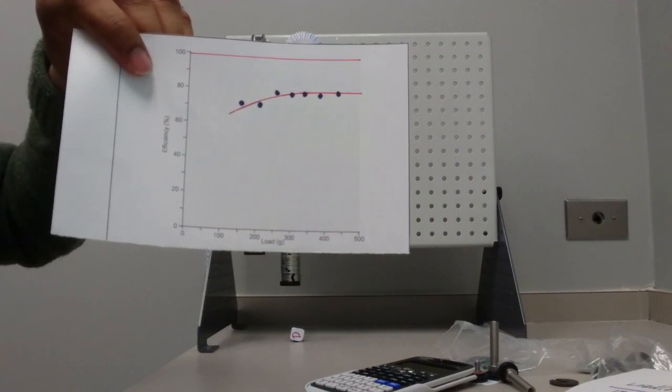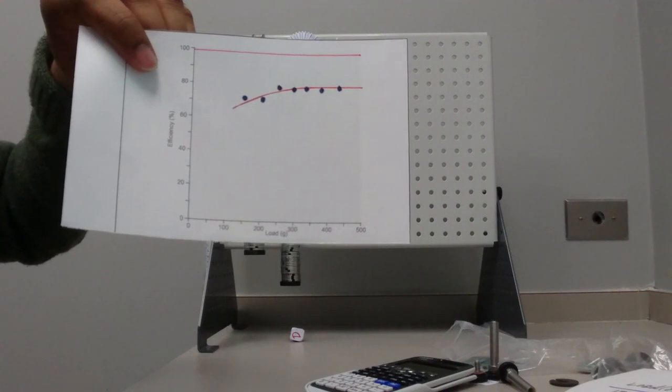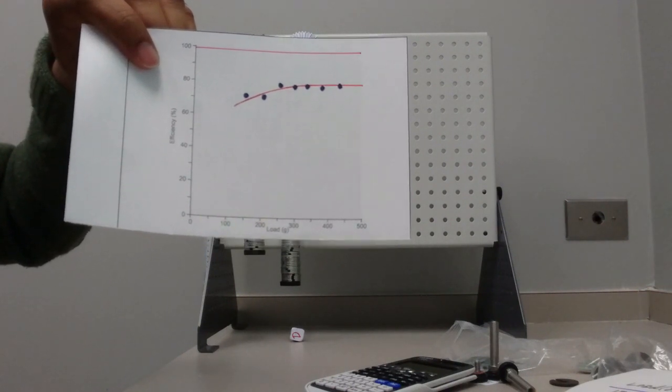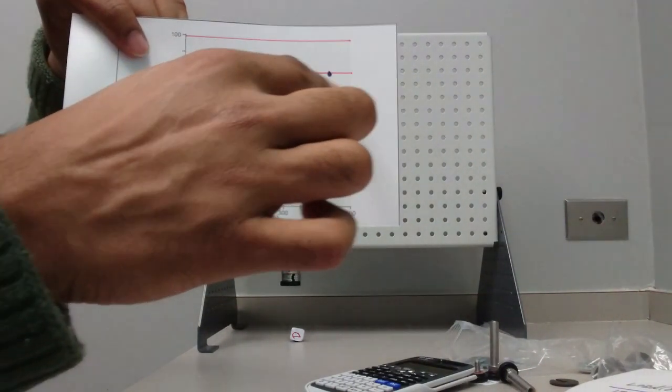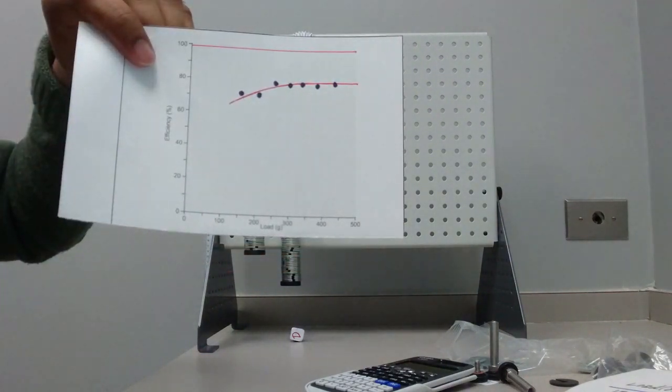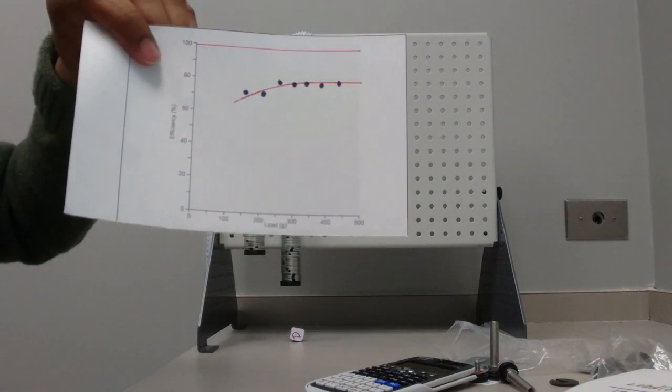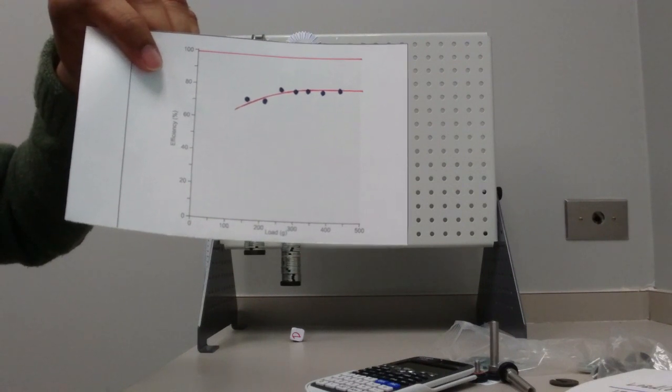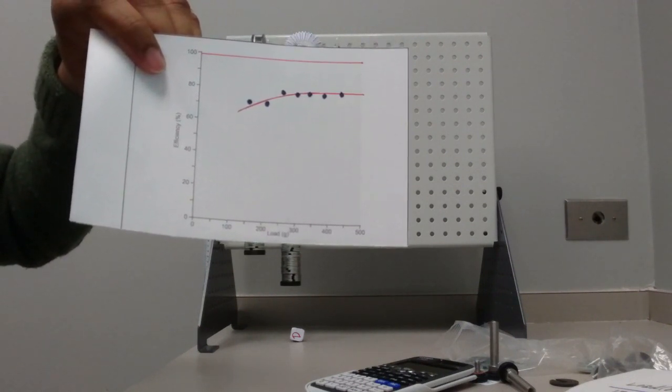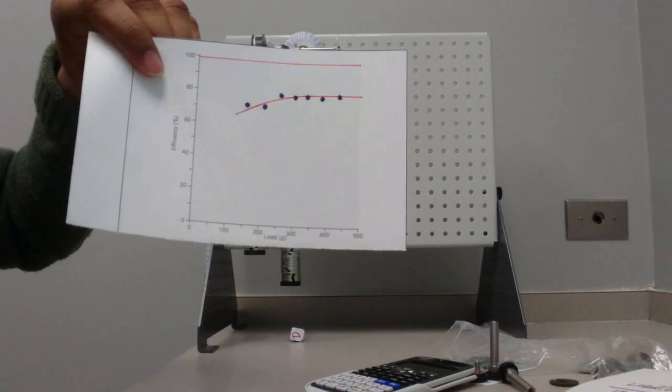From about 250 load, our efficiency is kind of stable, and that's what we should expect for our setup. For bevel gears, our efficiency should be around 80 percent.